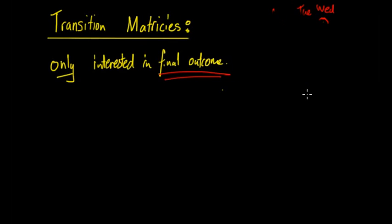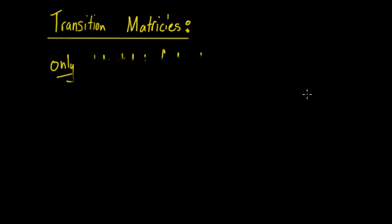So there are two major parts of transition matrices: the actual transition matrix itself and the initial condition. First, you have to set up the transition matrix.